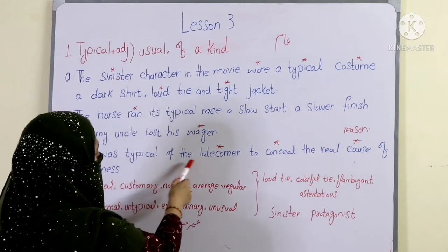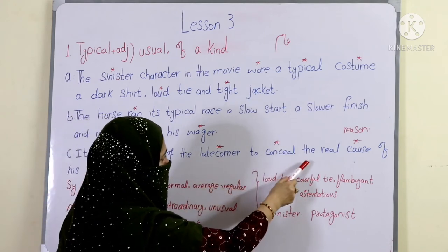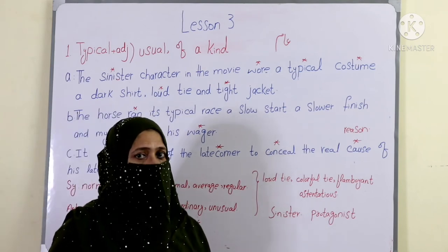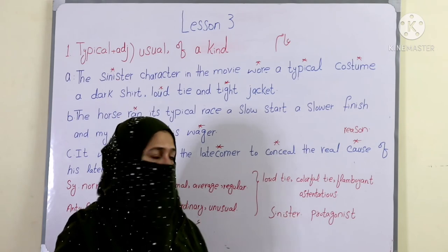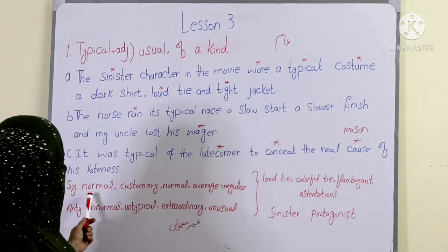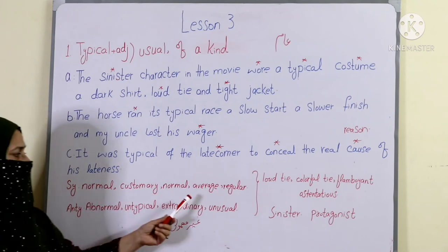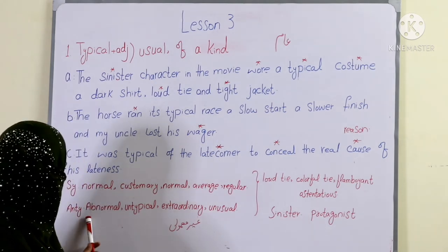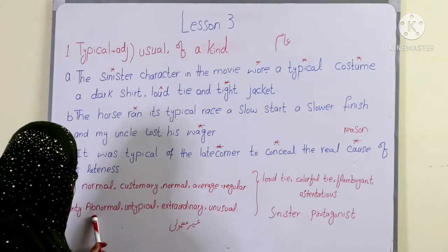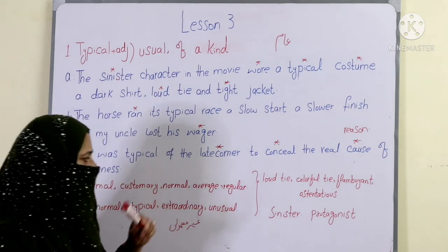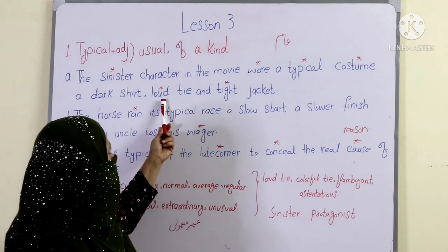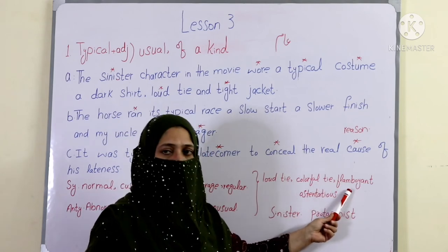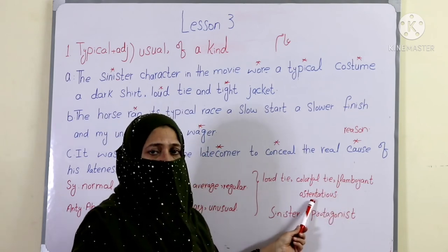It was typical of the latecomer to conceal the real cause of his lateness — the latecomer is always late and hides the reason for his lateness. Synonyms of typical: normal, customary, average, regular. Antonyms: abnormal, untypical, extraordinary, unusual. Remember that 'loud tie' means a colourful, flamboyant or ostentatious tie — a vibrant colour that attracts attention.